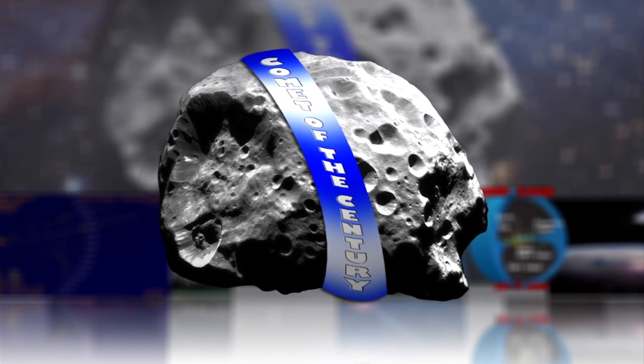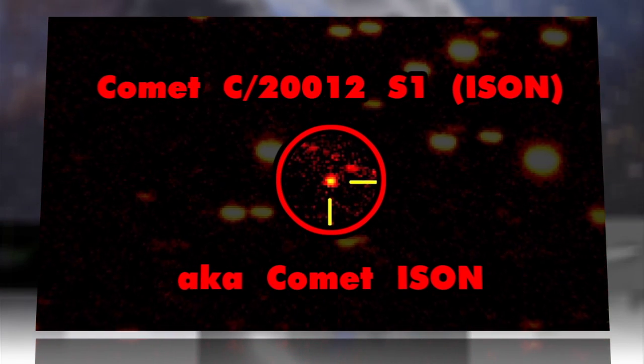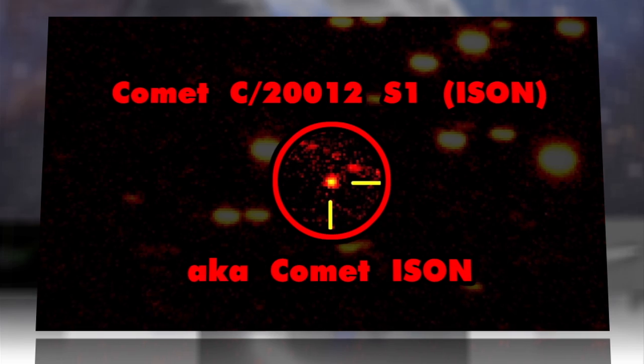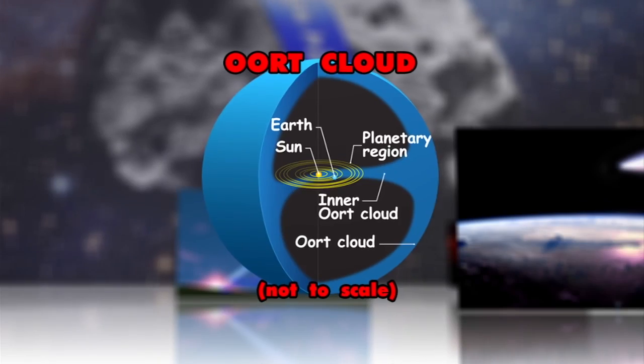It may be the comet of the century or the dud of the decade. Comet ISON, a recent exile from the far reaches of our solar system known as the Oort Cloud, is heading inward toward the Sun.